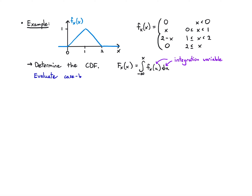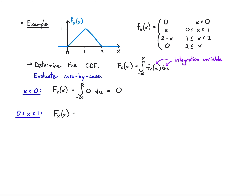The easiest case: if x is less than zero, I'm just integrating zero the whole way, so the CDF is zero. It gets interesting when x is between zero and one. There I integrate from minus infinity, hitting zero until I reach zero, then integrate u du for the slope-one region. I get zero plus one half u squared from zero to x, which gives one half x squared.